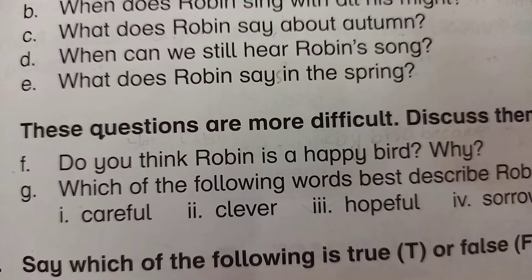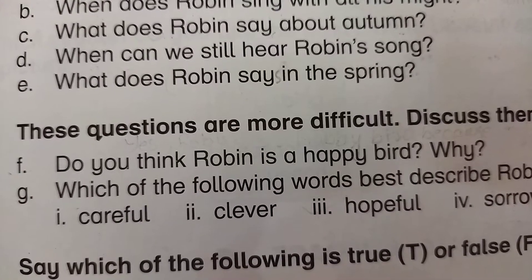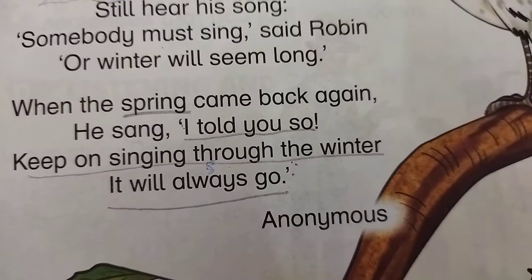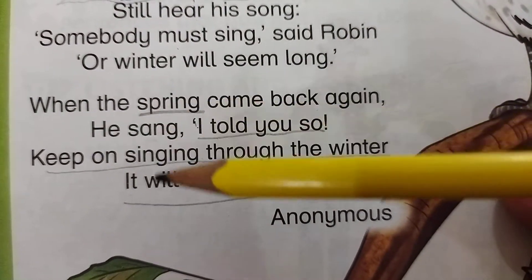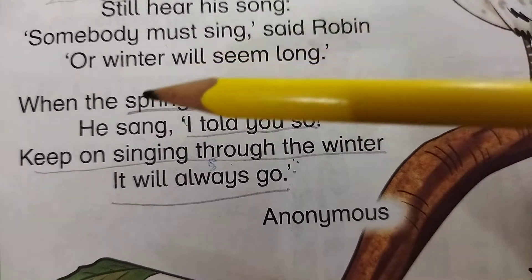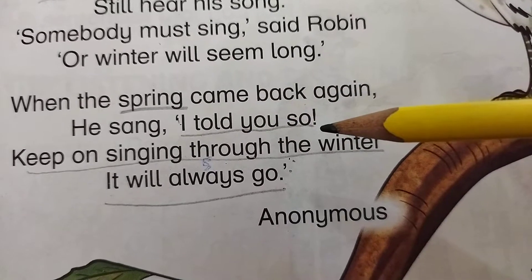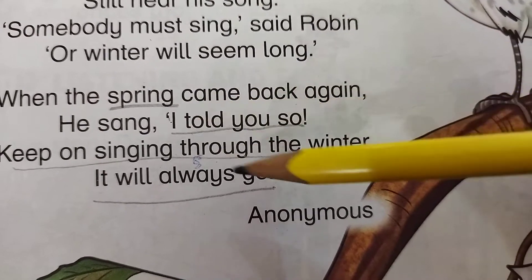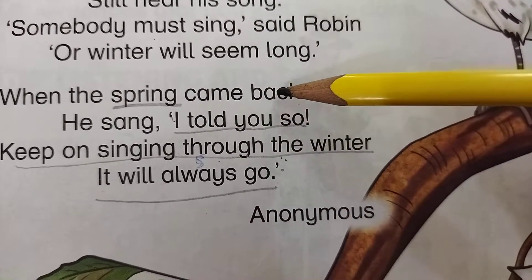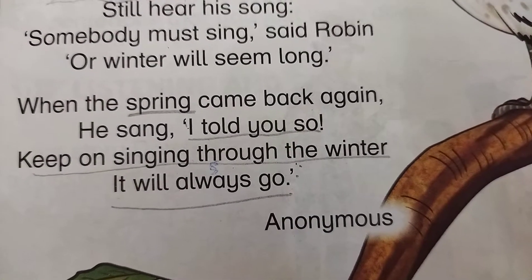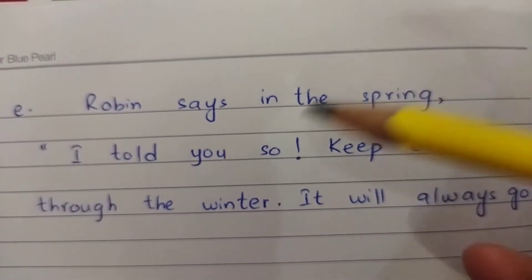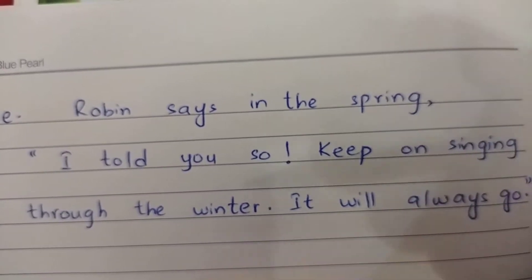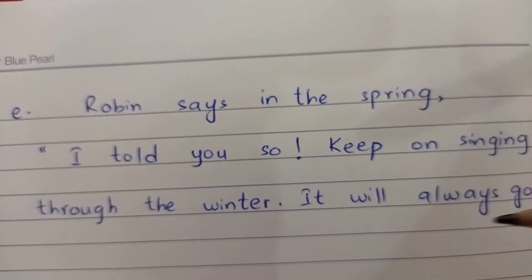Then comes part E: 'What does Robin say in the spring?' We need to quote his exact words. In the last stanza: 'When the spring came back again, he sang: I told you so, keep on singing through the winter, it will always go.' So the answer is: Robin says in the spring, 'I told you so, keep on singing through the winter, it will always go.'